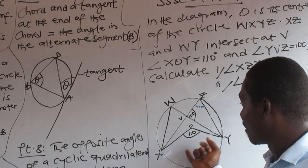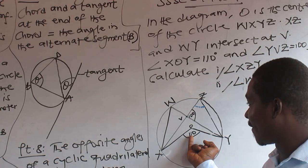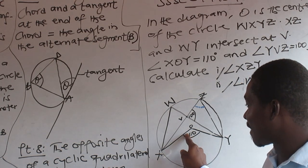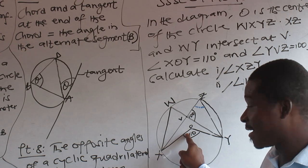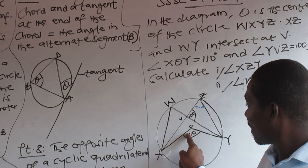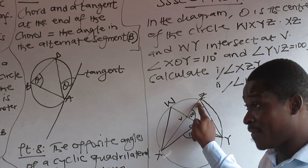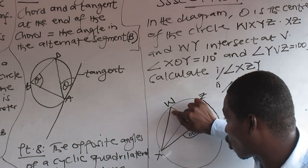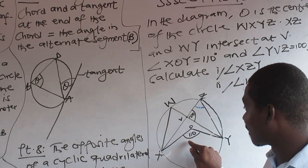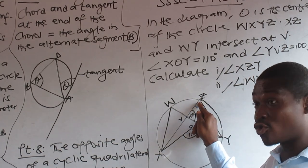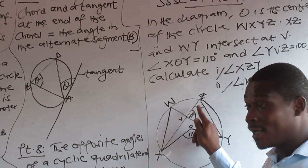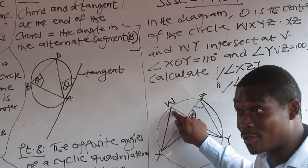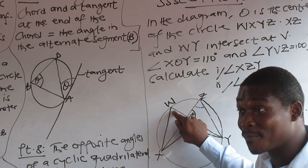Look at the design — this angle is at the center. The center controls this angle here. The center can also control the angle on the other side. This is the center. So we apply Property two: the angle at the center is twice the angle at the circumference.